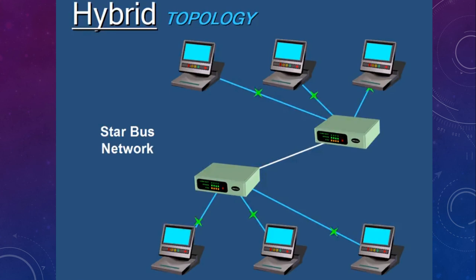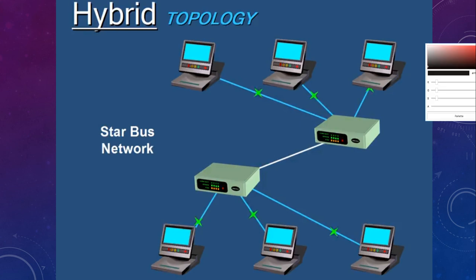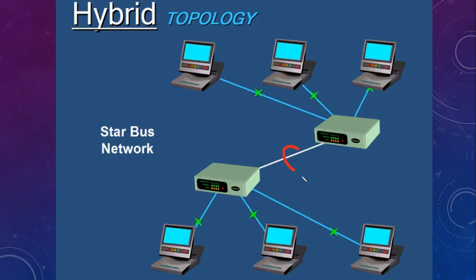Then we have hybrid topology, where we use a combination of bus, star, and mesh technologies. For example, a star-bus hybrid has two star networks connected to each other with a bus cable. If that central bus network breaks, the two star networks can still communicate within themselves but not with each other.